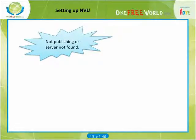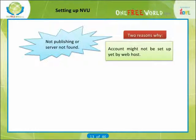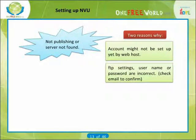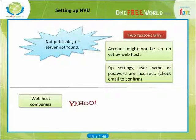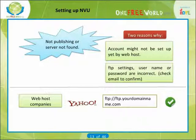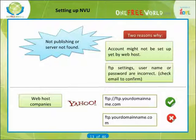However, if it's not publishing or can't find the server, then there might be two reasons why. First reason: it might take 24 to 48 hours for your web host to set up your account and make it available for you to use with NVU. Second reason: your FTP settings, username or password are incorrect. You need to check your email from your host and confirm this information. Occasionally some web hosting companies like Yahoo require you to enter FTP colon slash slash FTP.yourdomainname.com instead. If you are using Optimal web hosting, then you just enter FTP.yourdomainname.com.